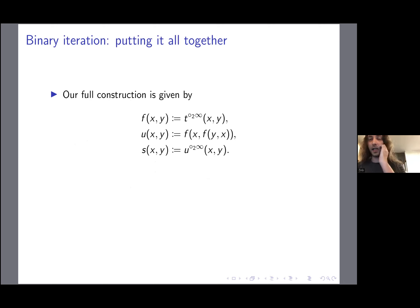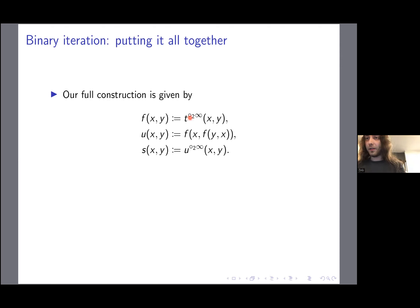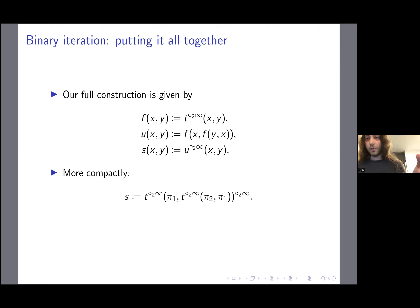To recap the whole construction: we start with T (assumed idempotent), iterate T on its second argument until it repeats to get F, plug F into itself in the surprising way F(x, F(y,x)) to get U, then iterate U on its second argument to get S. In one compact line: take T, iterate it, plug in π₂, π₁, take T, iterate that, plug in π₁ and the result, and compose the whole operation on its second argument. The construction inherits nice behavior from unary iteration.